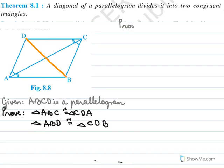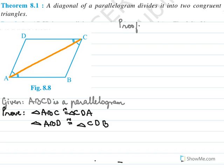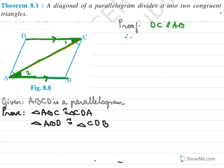Let's start with the proof. In a parallelogram, the opposite sides are parallel. So DC is parallel to AB. Because DC is parallel to AB, these two angles will be equal by alternate angles — I am drawing my Z. So we have DC parallel to AB, therefore angle 1 equals angle 2, alternate angles.